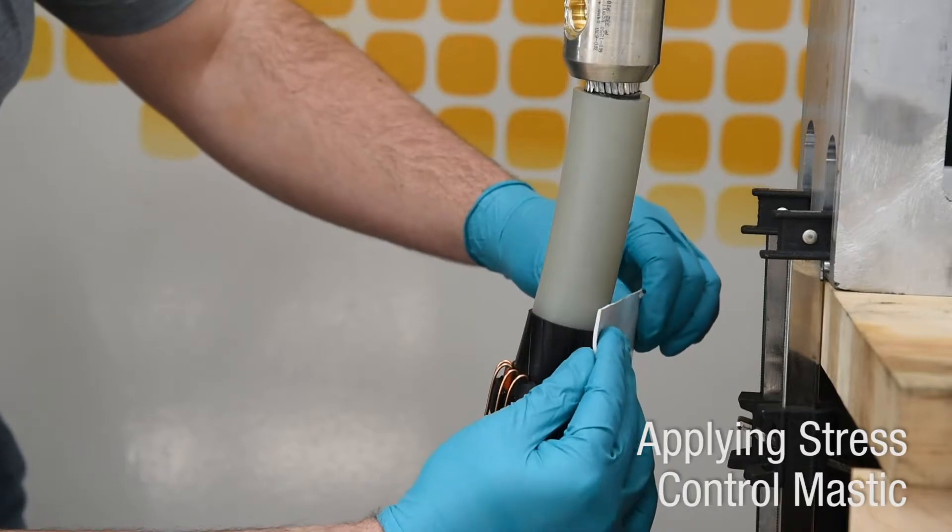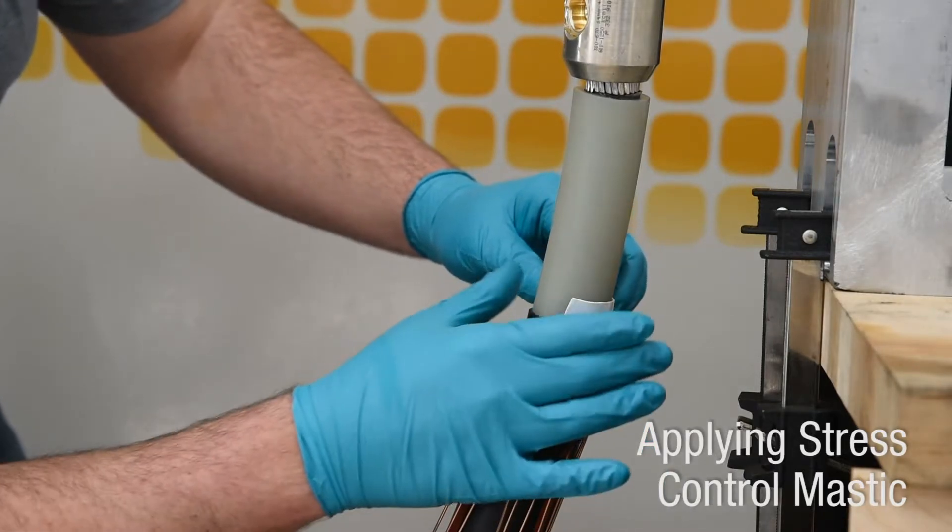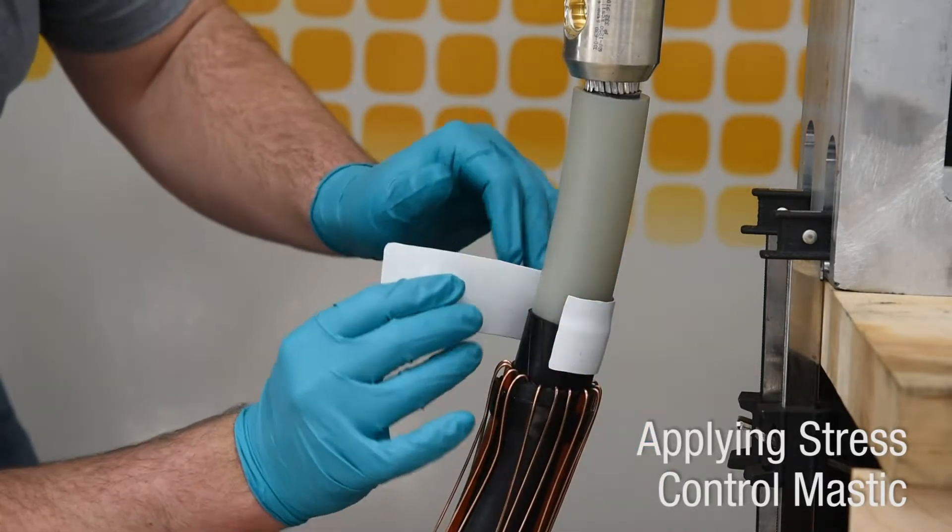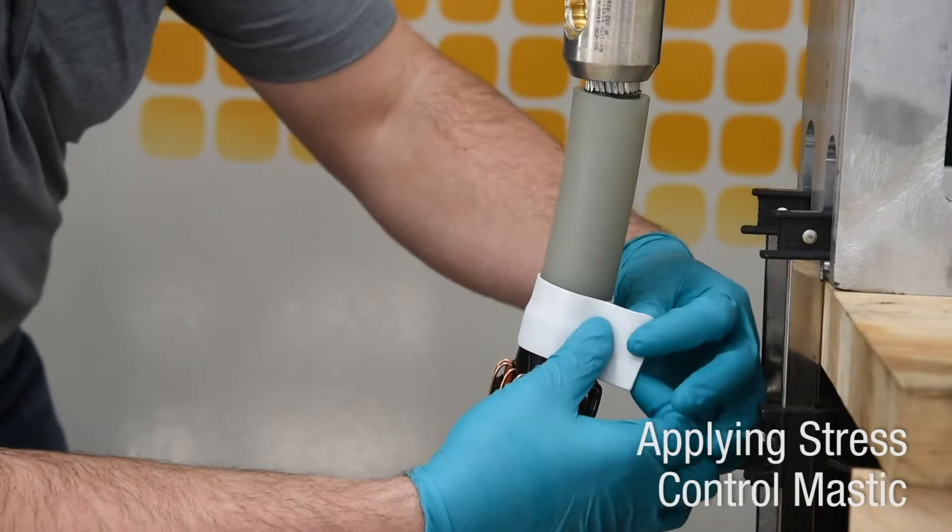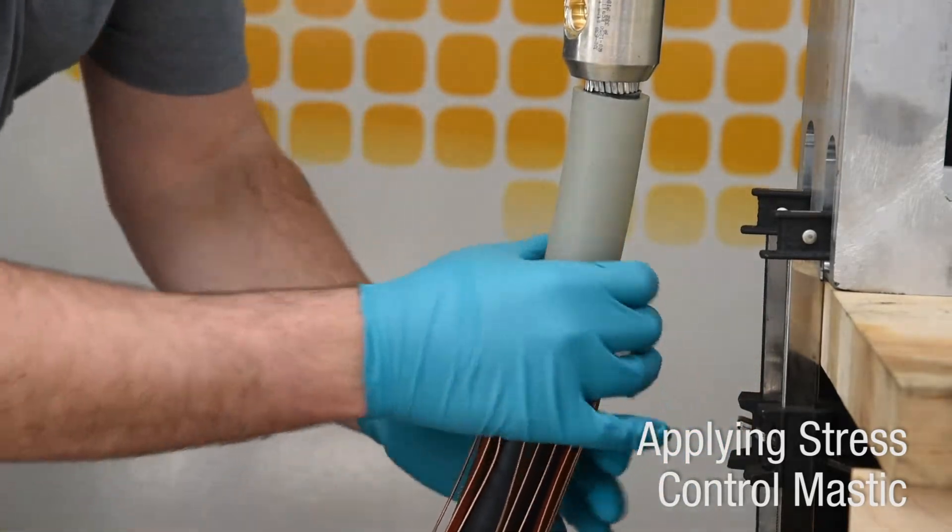Apply supplied stress control mastic centered over edge of semiconductor shield cutback. Apply the mastic with light tension so it slightly stretches and completely wraps the cable.